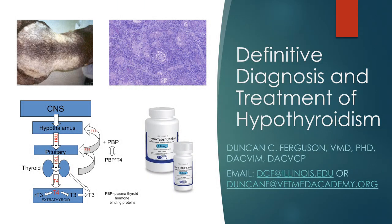Hi, this is Duncan Ferguson. In this presentation, we're going to discuss the definitive diagnosis and treatment of hypothyroidism. We're going to use our understanding of the physiology of the hypothalamic-pituitary thyroid axis and the pathophysiology of the main cause of hypothyroidism in the dog — that is, autoimmune thyroiditis — in order to understand the tests that we're going to choose.